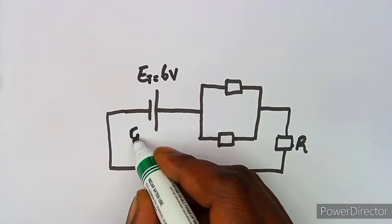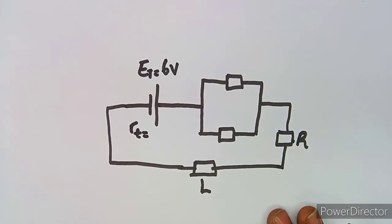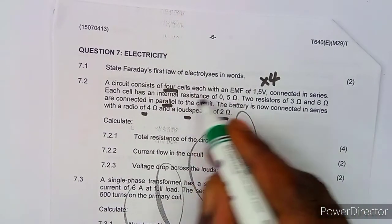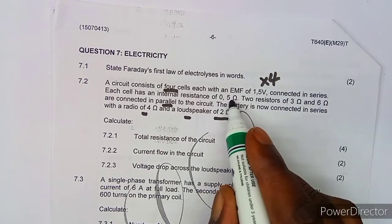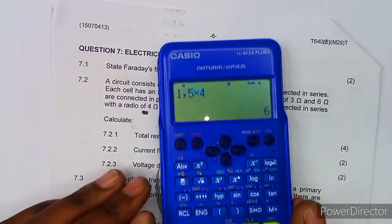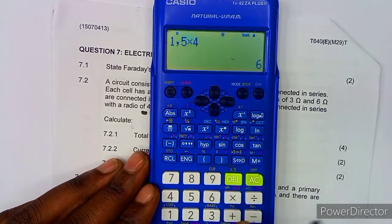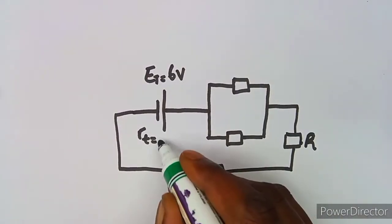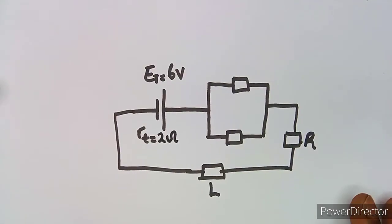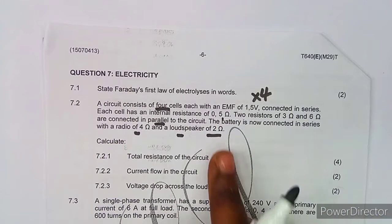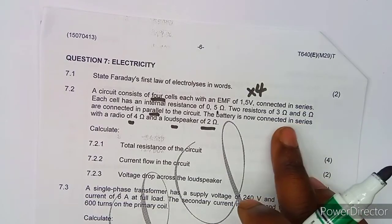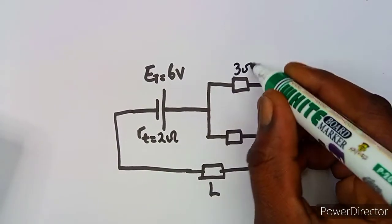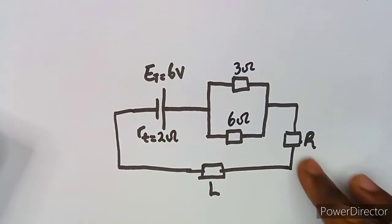We also need the total internal resistance. We have four cells each with an internal resistance of 0.5 ohms, so 0.5 × 4 = 2 ohms total internal resistance. In the parallel section we have three ohms and six ohms. Then we have the radio and the loudspeaker in series — the radio is four ohms and the loudspeaker is two ohms.